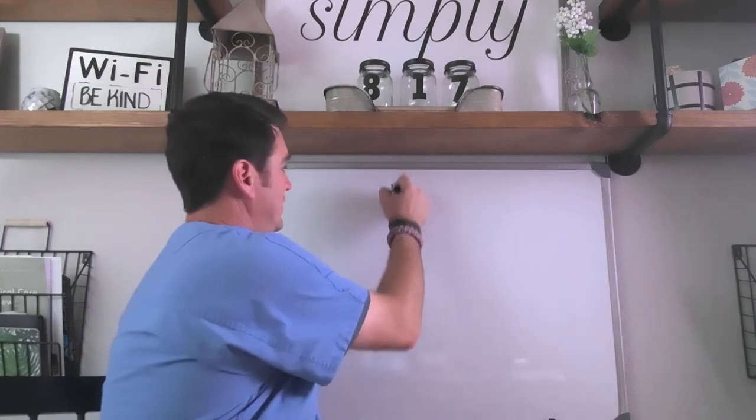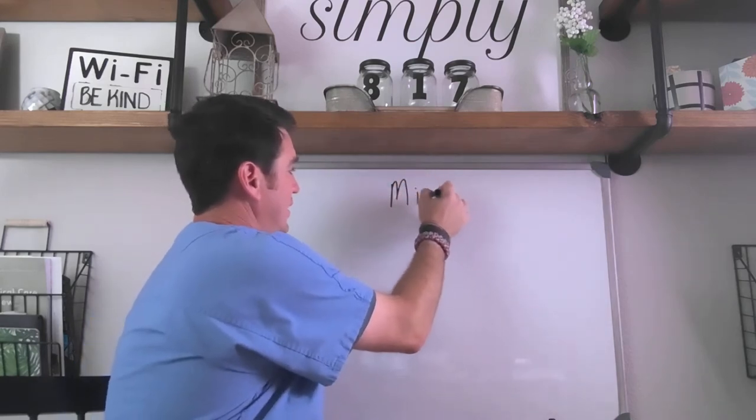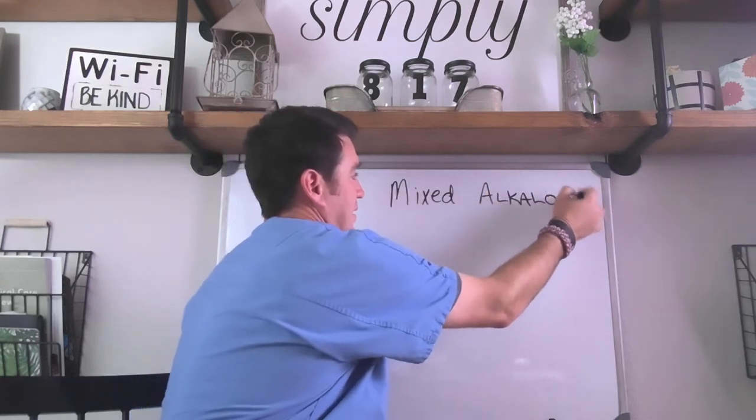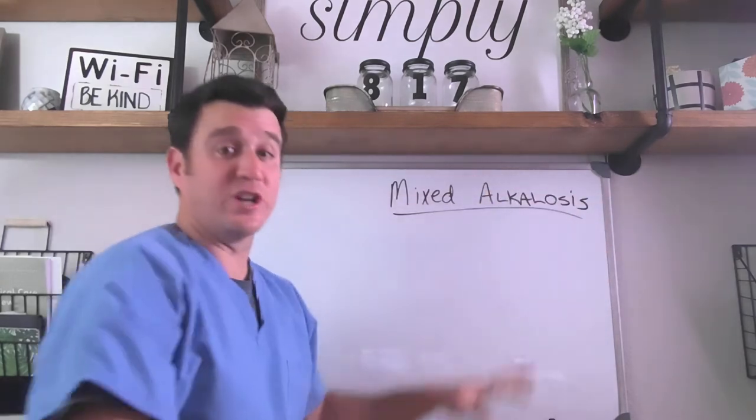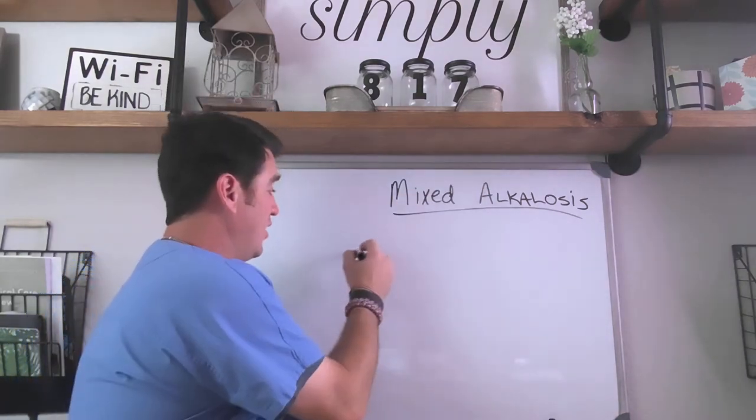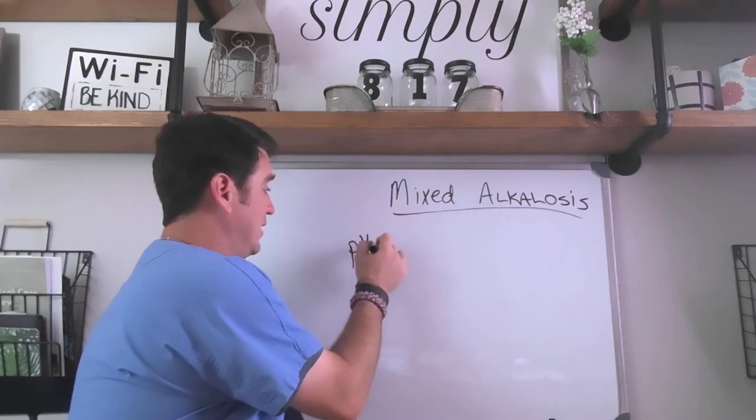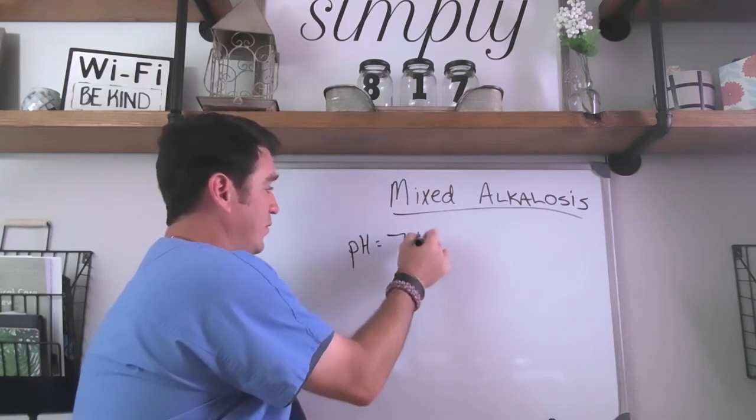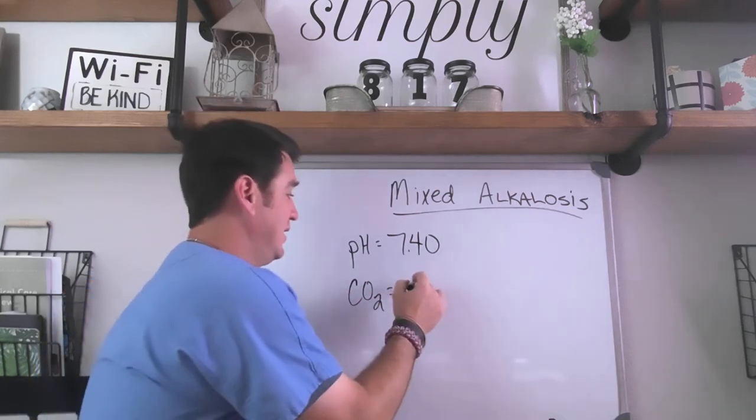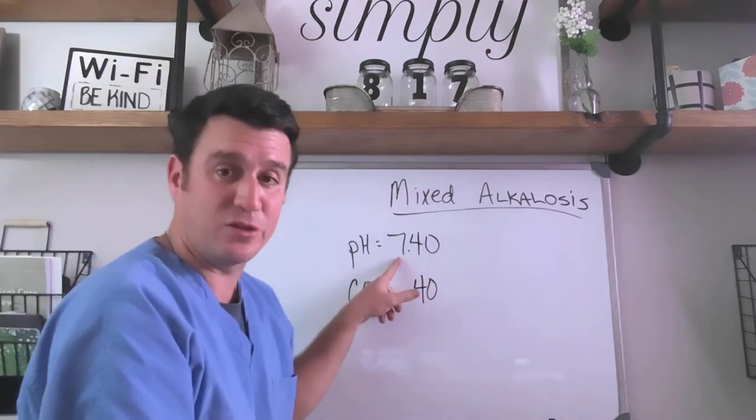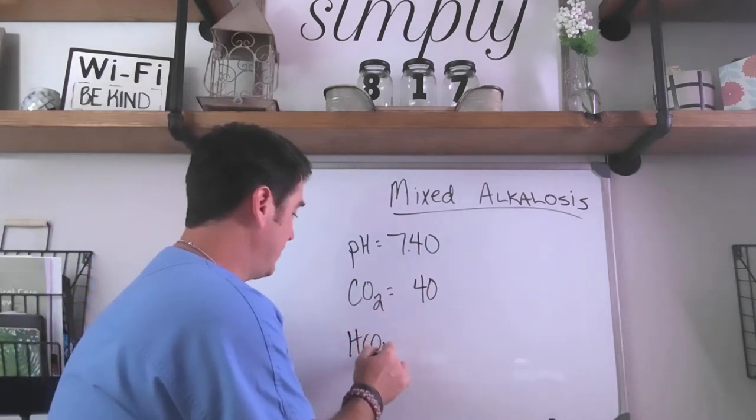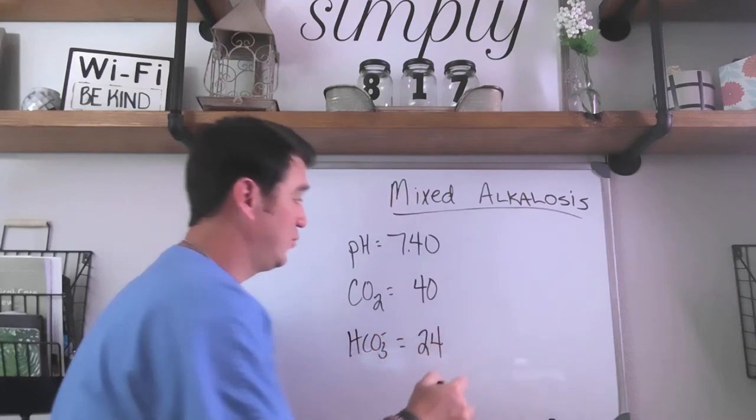So we're talking about mixed alkalosis. This is where we're going to start. Remember we always start at baseline, so what are our normal values? We know our normal pH equals 7.40, our normal CO2 35 to 45, let's just go 40, and normal bicarb 22 to 26, we're going to go with 24.